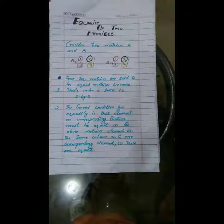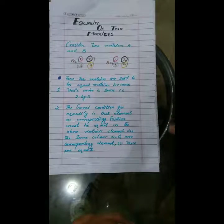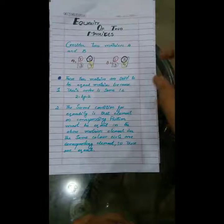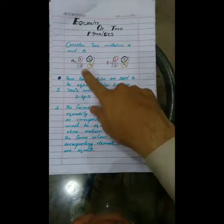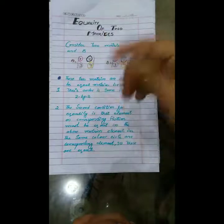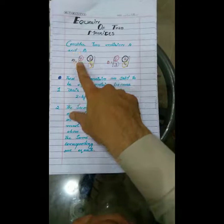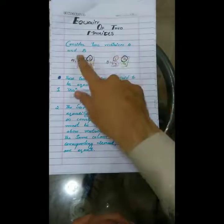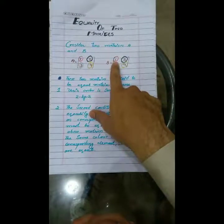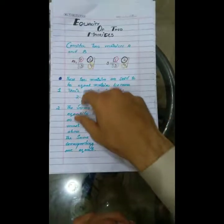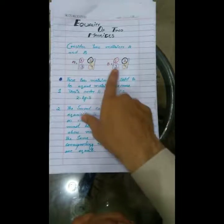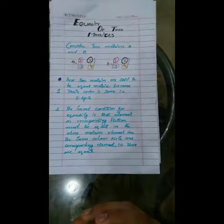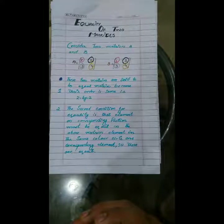Over to the second condition. If the order of the two matrices are equal or same, then you must check the second condition: the corresponding entries of the two matrices must be the same. Elements at the same position in two different matrices are called corresponding entries — like one here and one here. You can observe that corresponding entries in these two matrices are the same.